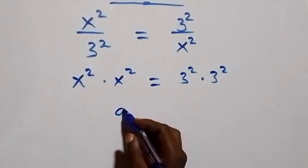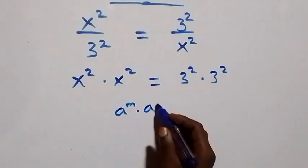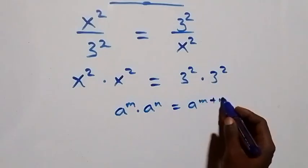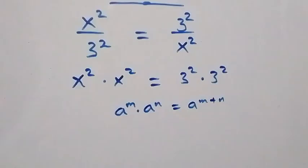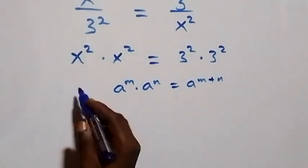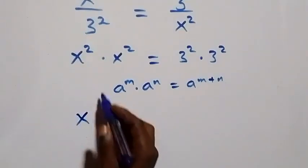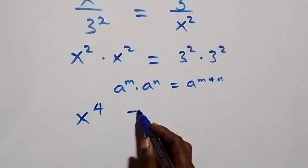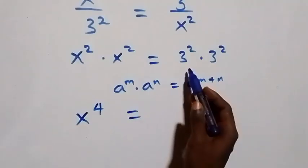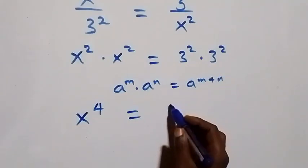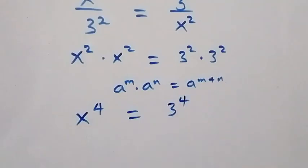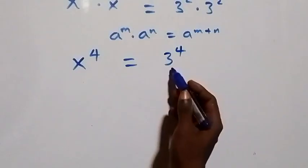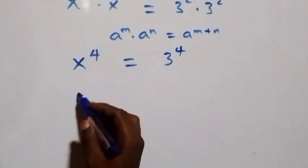From the law of indices, we have a raised to power m times a raised to power n equals a raised to power m plus n. So here we have x raised to power two plus two, which is x raised to power four, equals three raised to power two plus two, which is three raised to power four.